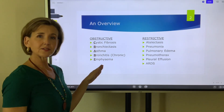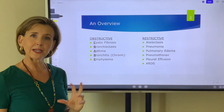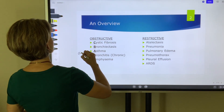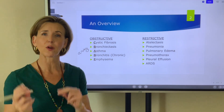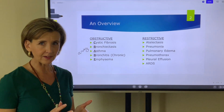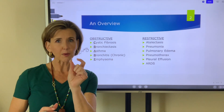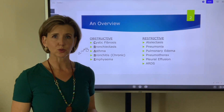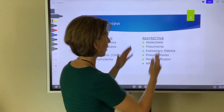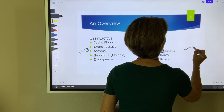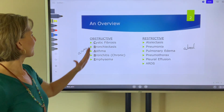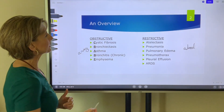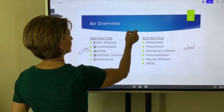On the chart, we have obstructive diseases — CBABE — classified as airway disorders. Emphysema, even though it has an alveolar component, affects the smallest airways and is still classified as an airway disorder. Restrictive disorders, on the other hand, all compromise the alveoli. So we have airway disorders on one side and alveolar disorders — disorders that compromise the alveoli — on the other.